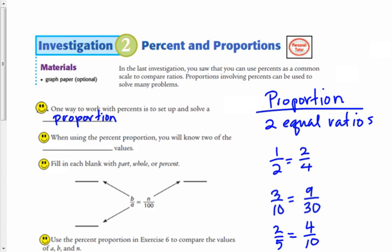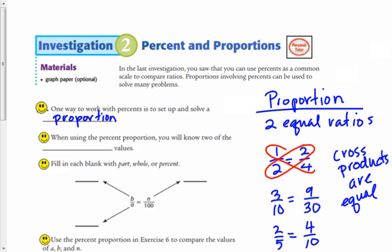Now one thing interesting that happens when you have proportions is that the cross products are equal. And we are going to use that to solve proportions that are missing a value. Cross products are equal, and what I am saying is that if I multiply two times two, that equals one times four, when we have a proportion.